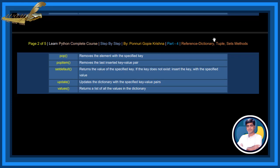SetDefault Method returns the value of the specified key. If the key does not exist, insert the key with the specified value. Update Method updates the dictionary with the specified key value pairs. Values Method returns a list of all the values in the dictionary.